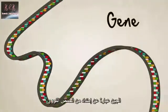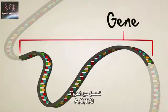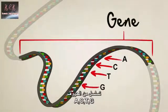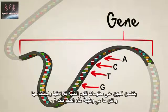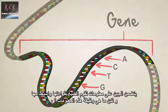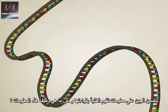A gene is a special stretch of DNA — a sequence of A's, C's, T's, and G's that code for something. A gene contains information for a cell to read and use, but what exactly does that information do?